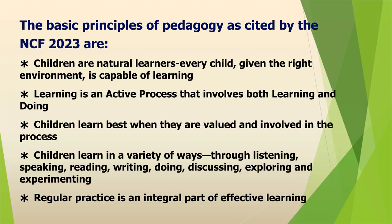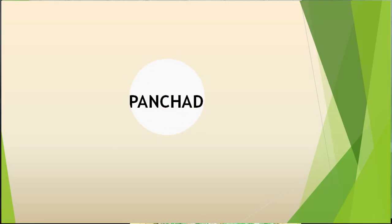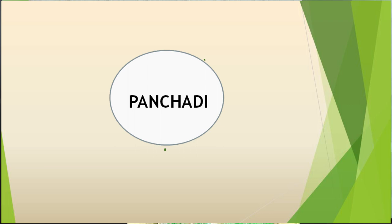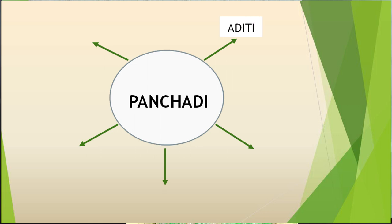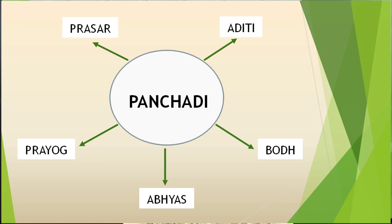For any model to work, proper planning is essential. NCF 2023 proposes the Panchadi or the five-step learning process. It can be remembered through an easy acronym ABAPP — Aditi, Bodh, Abhyas, Prayog and Prasar. Let us understand each term very clearly.